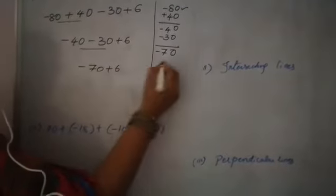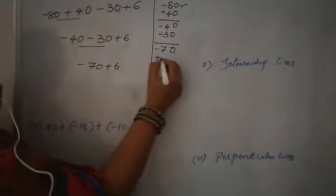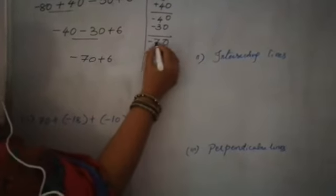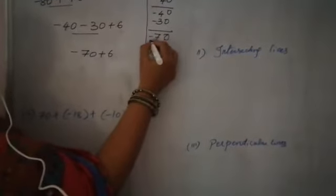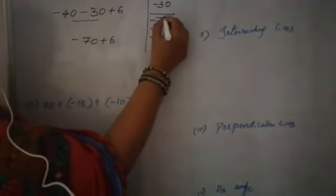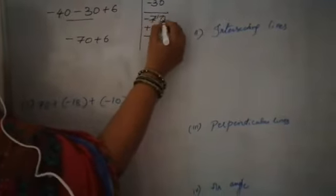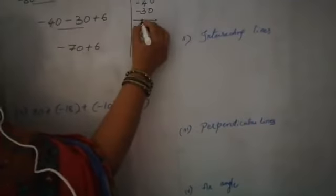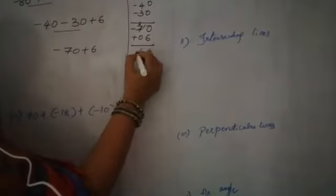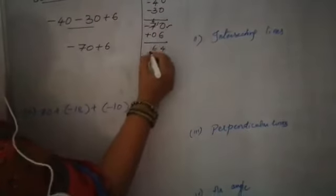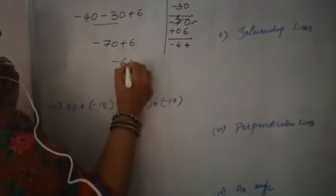Plus 6. Last two numbers: plus 6. Two different signs — again you have to subtract. Borrow children. 10 minus 6 is 4. 6 minus 0 is 6. So bigger number is 70, it has a minus sign. So minus 64.